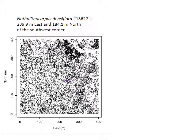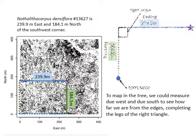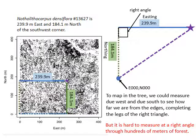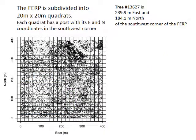Tan oak number 13627 is 239.9 meters east and 184.1 meters north. To map in the tree, we could simply run out measuring tape due west from the tree to the plot edge and due south to the plot edge, completing the legs of the right triangle. But it's hard to measure long distances through the forest, and it's even harder to measure at right angles over long distances. To make it easier, the FERP is divided into 20 meter by 20 meter quadrats. Each quadrat is marked with a PVC post, a yellow flag, and a metal tag that indicates the coordinates of the southwest corner of the quadrat.